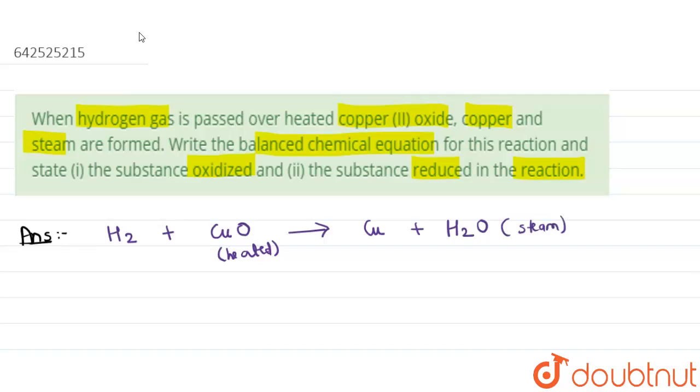This is the balanced chemical equation: hydrogen is balanced, oxygen is balanced, copper is balanced. Now what we have asked is substance oxidized. Oxidation means addition of oxygen...